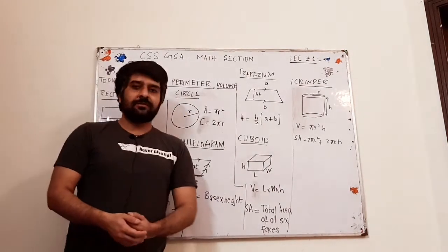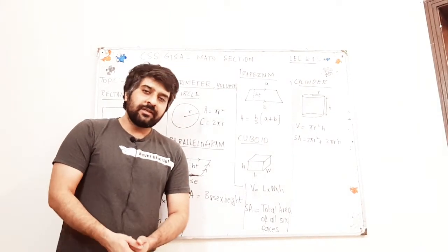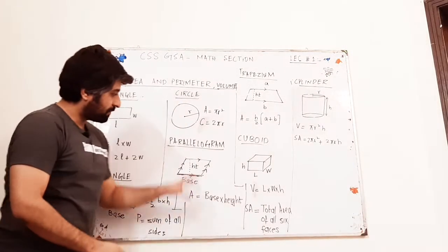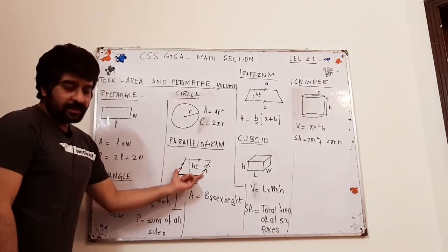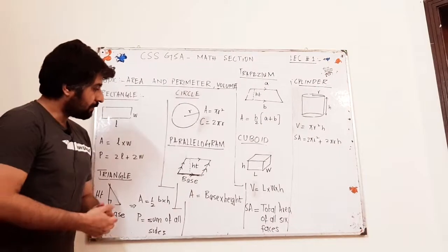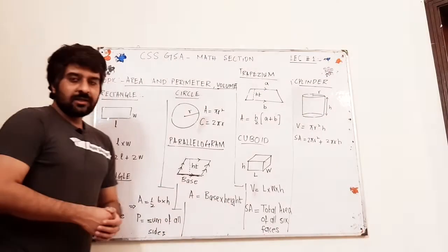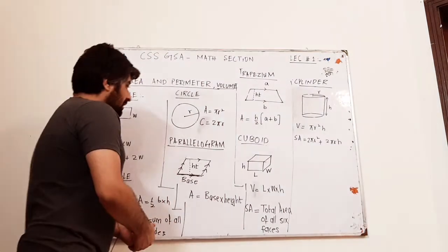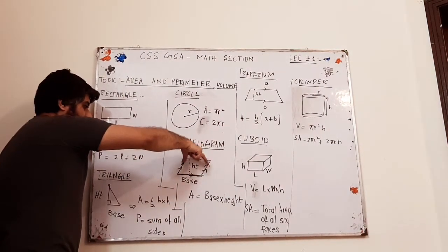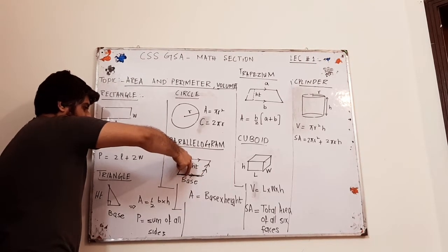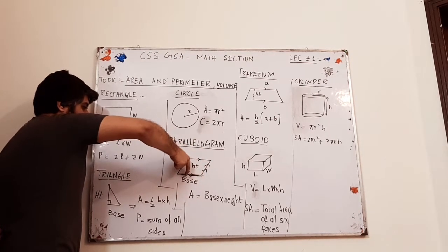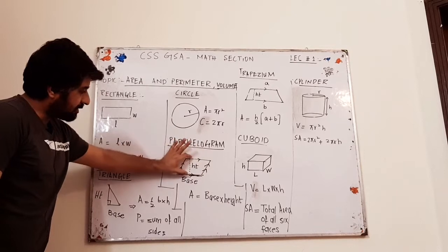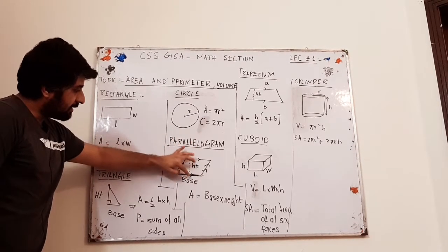Then we have a parallelogram, a shape in which opposite sides are parallel. You have got two sides with double arrows and two sides with single arrows — the sides with double arrows are parallel, and the sides with single arrows are parallel to each other. The area of a parallelogram is base into height. You must identify where the height and base are: the perpendicular distance between the two parallel sides is the height, and any one of those parallel sides may be taken as the base.